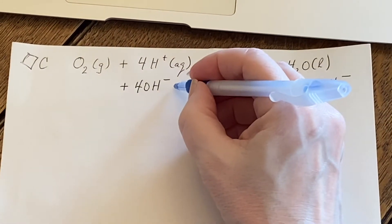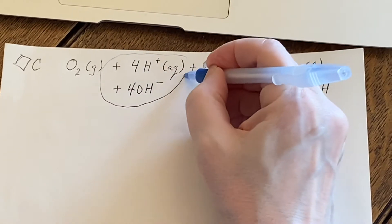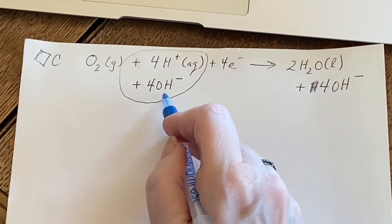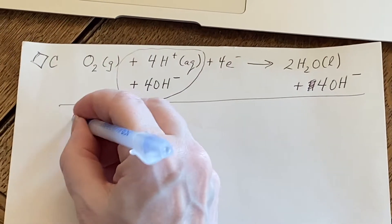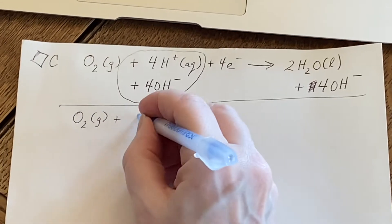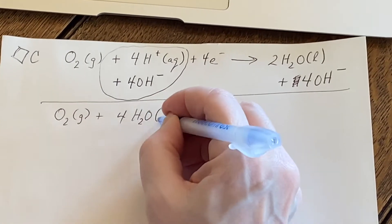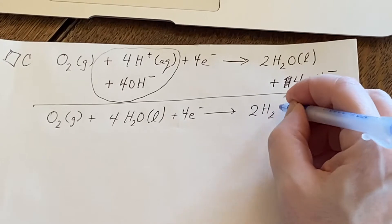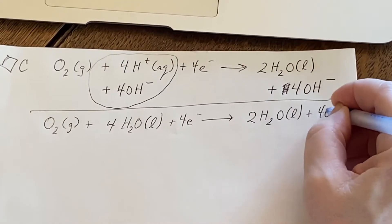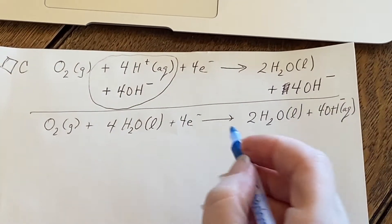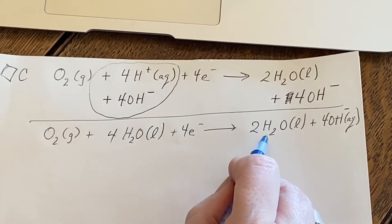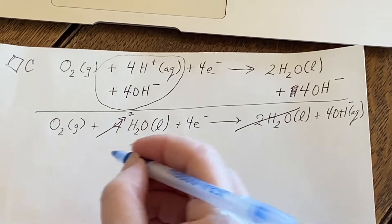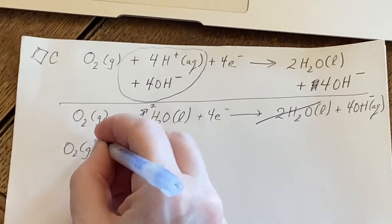And then look what happens. Those are going to combine to form water. So this turns into O2 gas and four water molecules and four electrons. Over here we still have two waters and now we have four OH- that are aqueous. Oh, I can do some cancellation. All of this will cancel out as four is going to become a two.